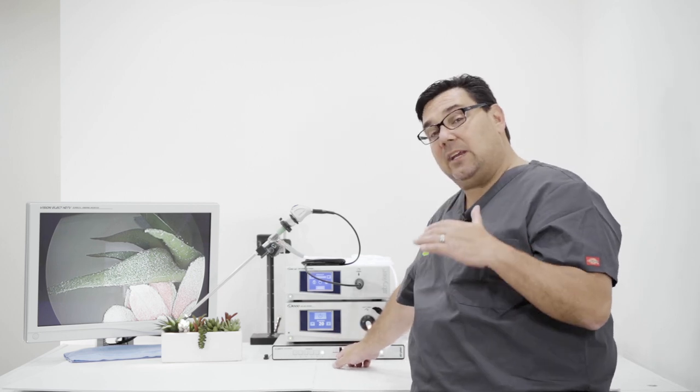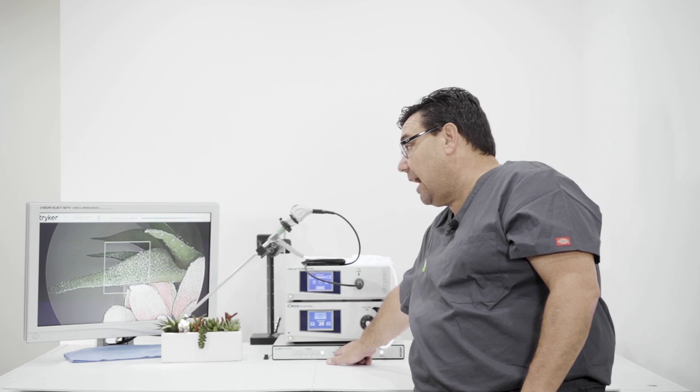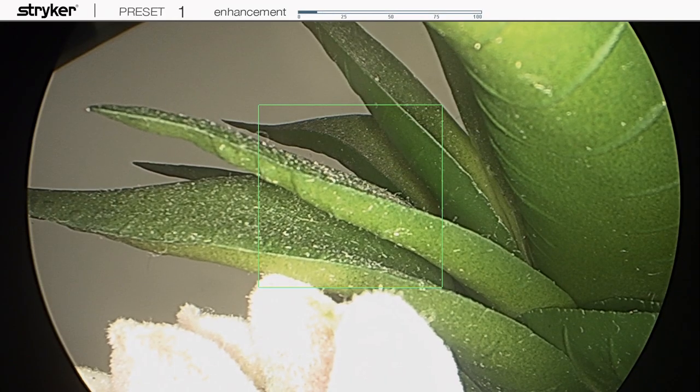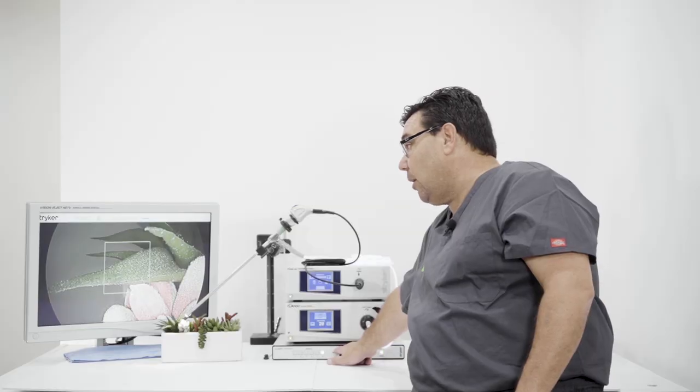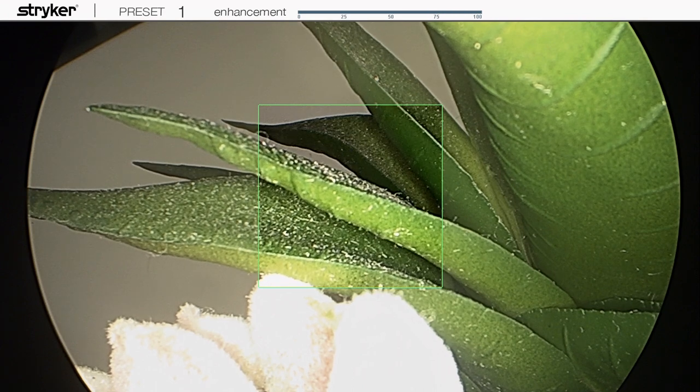If you want to turn the enhancement down, you have the ability to turn it down through the actual preset button, and it's right here. So it goes from 0 to 25 to 50 to 75 to 100.